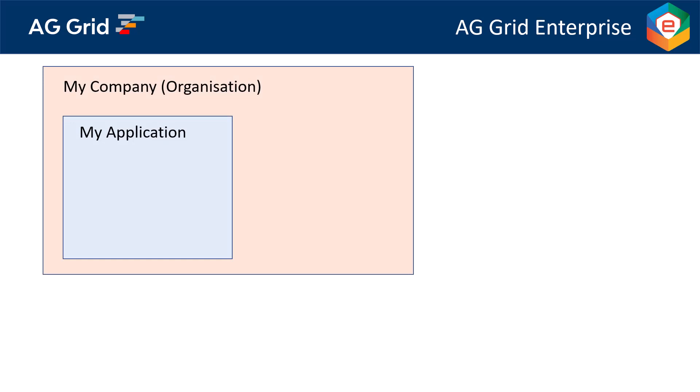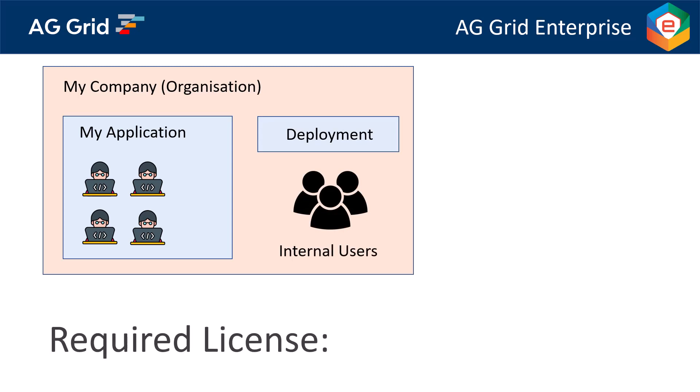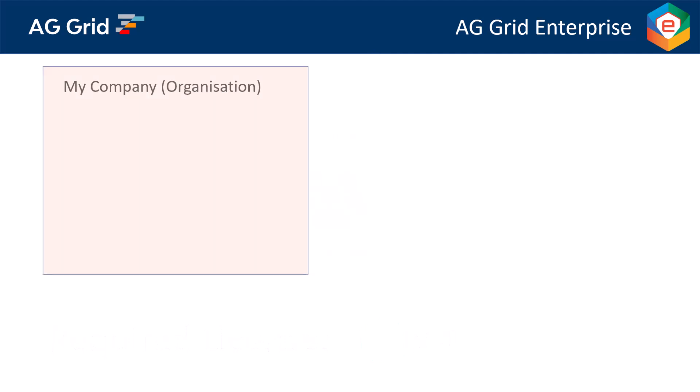Let's consider one application with four front-end JavaScript developers where the application is to be used within the organization. We would need a Single App license for four developers. An example of this would be a project in a bank with four developers working on an application used internally by the bank's employees, for example to assist with finance or trading operations. As the application is not accessed externally, the Single App license for four developers is all that's needed.